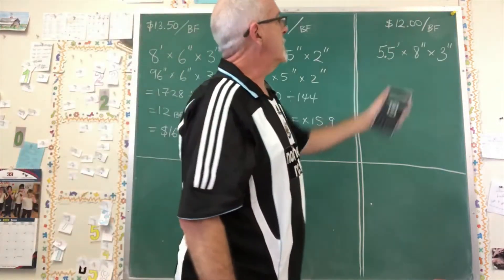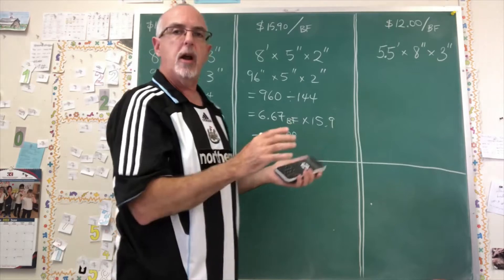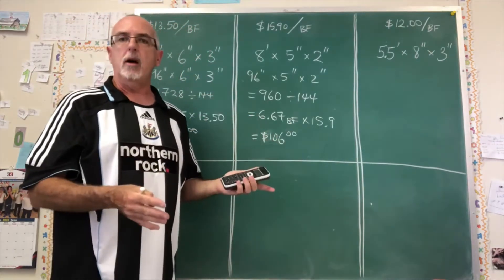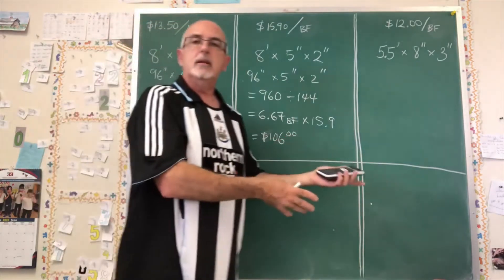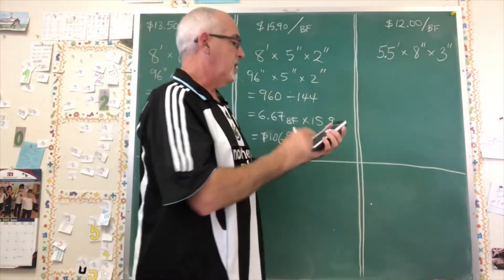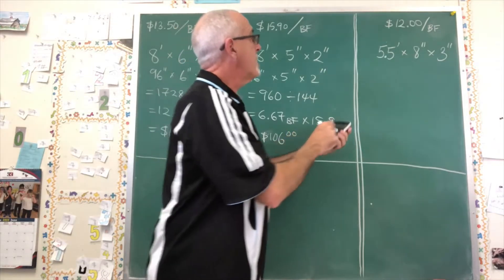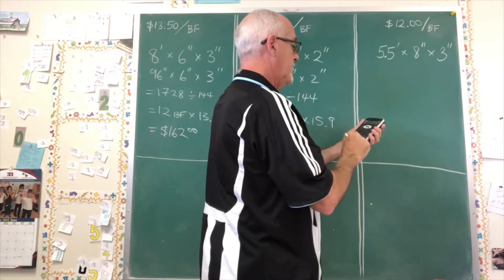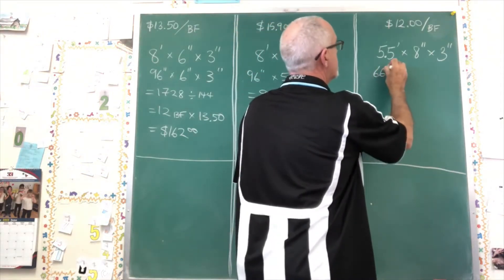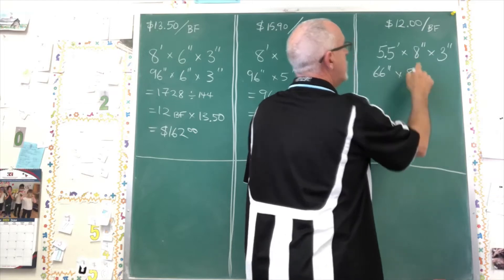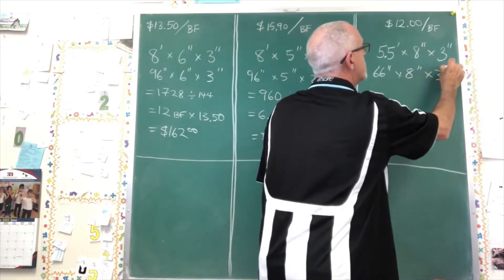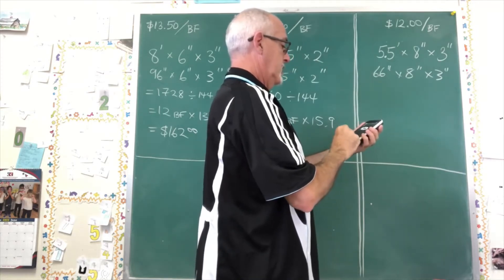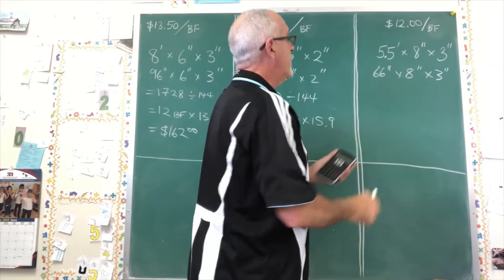Now we're looking at this last example. We have 5.5 feet. So this time I'm in the wood store and they don't happen to have a piece that's eight feet long. So I get the piece that I'm interested in and it happens to be 5.5 feet long. 5.5 times 12 inches is 66 inches. So that's 66 inches. And I'm multiplying it by its eight inch width and its three inch thickness. And I'm getting 1584.